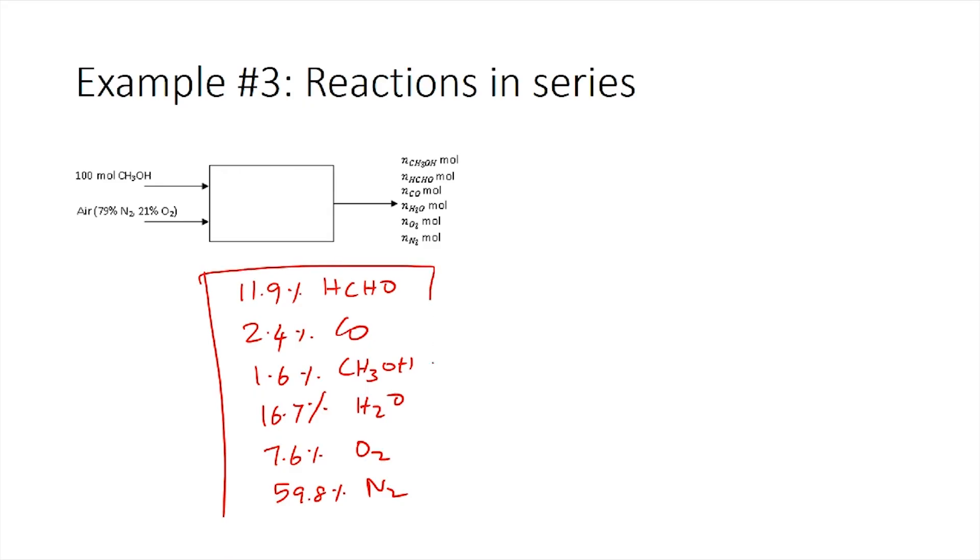This gives the molar composition of the product gas. With this we conclude the example problems using single unit processes with multiple reactions. In subsequent lectures we will look at multi-unit processes where a reactor is one of the units, and just as we solved for multi-unit processes without reactions, the critical aspect will be choosing the correct system. We will move on to that in the next lecture.